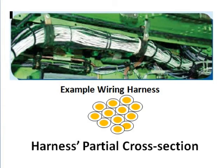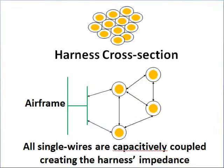First, let's look at a cross-section of a harness. While the wires are individual, they are all in contact with each other. It's this capacitive coupling that determines the impedance between any two wires being used to test, or any one wire in the airframe.